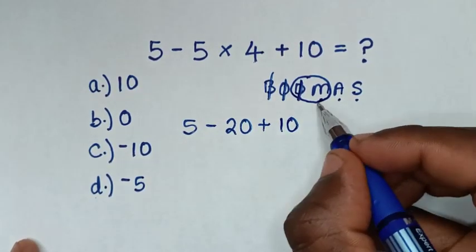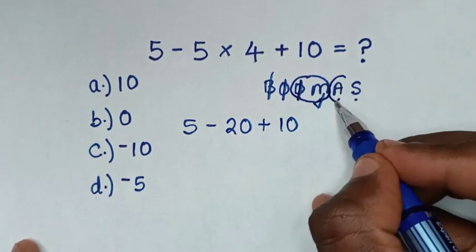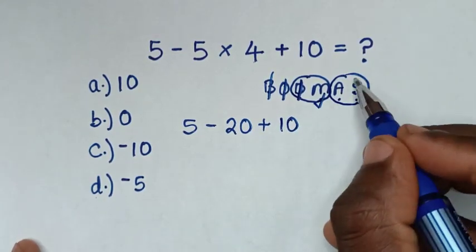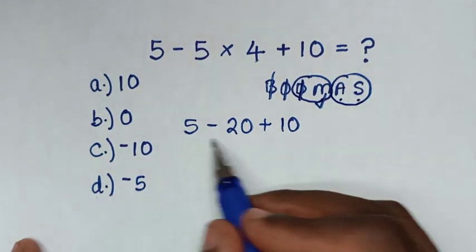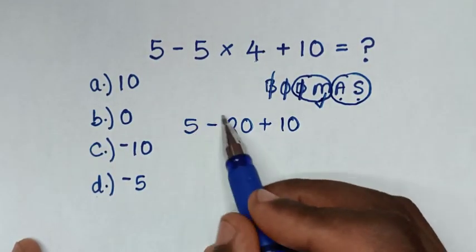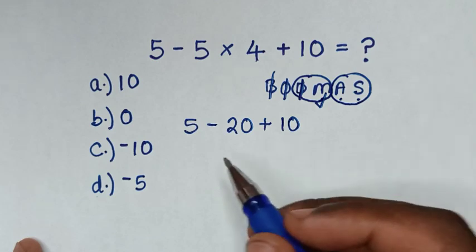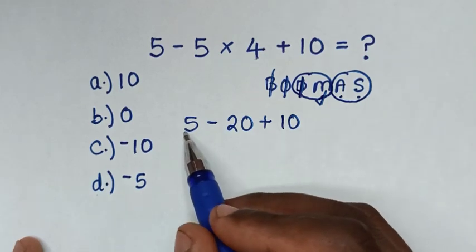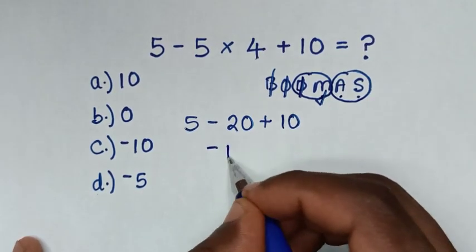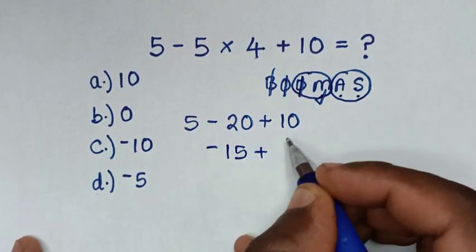Then, after we deal with multiplication, we deal with this group of addition and subtraction, according to what starts first. In this operation, it starts with subtraction, then addition. So, deal with this subtraction of 5 minus 20 is negative 15, then plus 10.